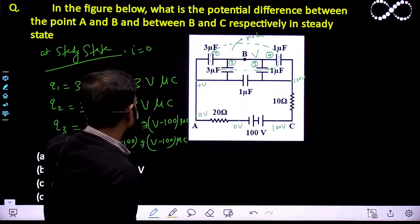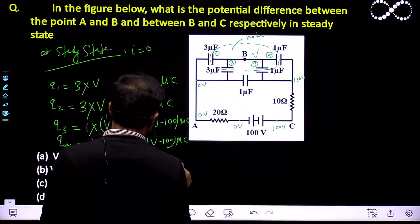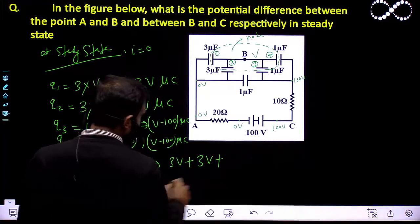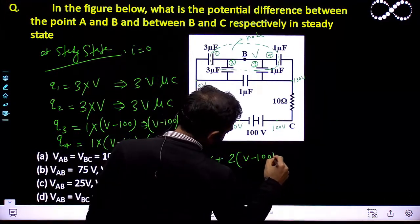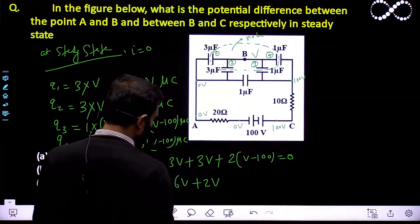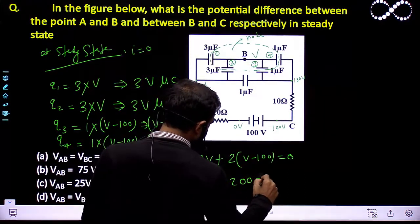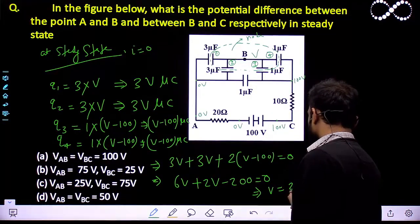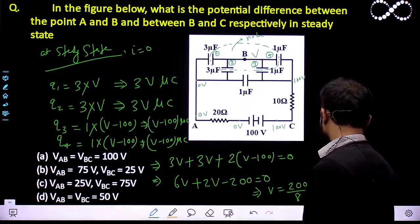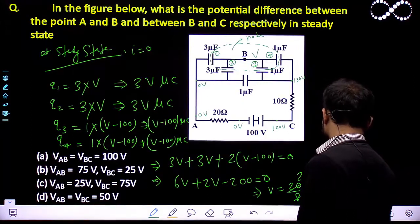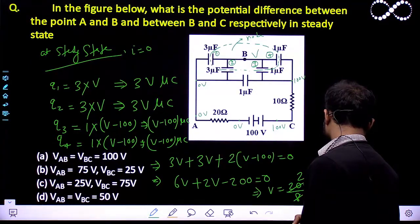The sum of all the charges must be equal to 0 because this is a node. So: 3V + 3V + 2(V − 100) = 0, which gives 6V + 2V − 200 = 0, so 8V = 200, therefore V = 200/8 = 25 volts.